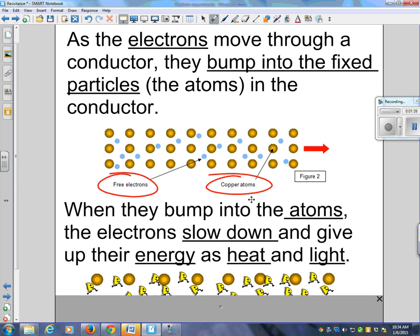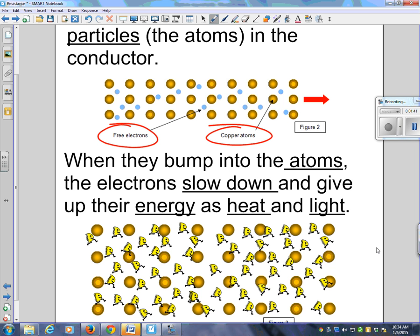When they bump into the atoms, the electrons slow down and give up their energy as heat and light. I talked about heat already with the extension cord. Can you give me an example where something lights up? A light bulb, exactly.